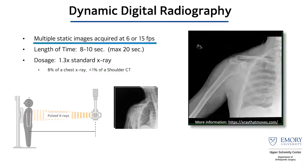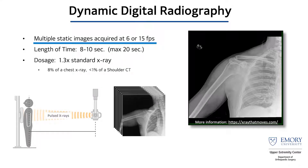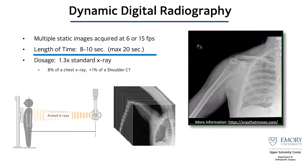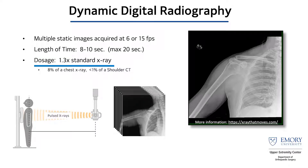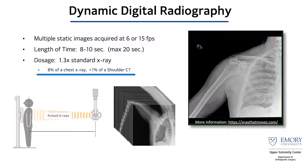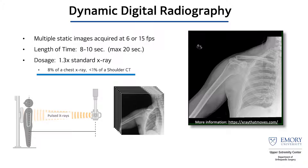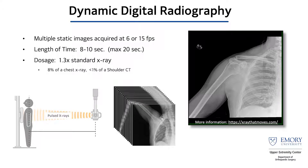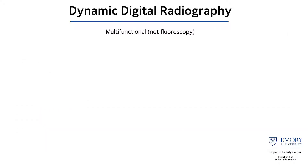DDR — what is it? It's basically multiple static images acquired at either 6 or 15 frames per second over approximately 8 to 10 seconds, with an average dosage only about 1.3 times greater than a standard x-ray. That's important to realize — it's much less than a chest x-ray, much less than a shoulder CT, so from a patient standpoint it really doesn't pose much extra risk. It's multifunctional.